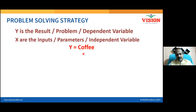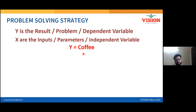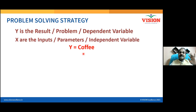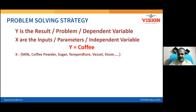Now, what are the X factors here? Sugar, coffee concentration, water level, brewing of coffee, milk, and temperature. These are all called the X factors. Why? Because all of them are under my direct control.